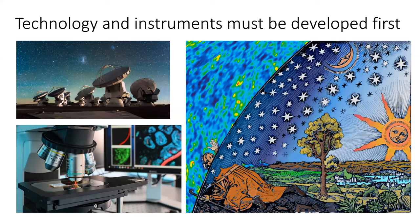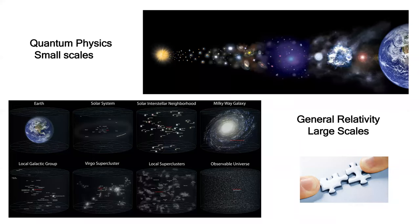My point is that you need to use the theory you have at hand to propose experiments and instruments. When we're able to reach those scales experimentally, we will be able to refine those theories, especially focusing on which principles we should keep from each theory. When we think about quantum physics, we always think about small scales and general relativity about big scales, but the development of quantum technologies has blurred these lines.